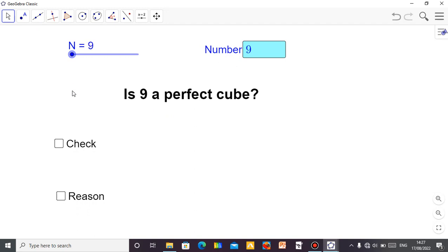For example, if you do 2 times 2 times 2, you know that 2 times 2 is 4, then 4 times 2 is 8. So 2 times 2 times 2 is 8. In that case, 8 is a perfect cube.